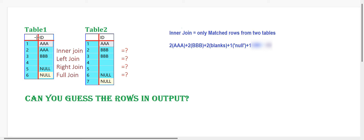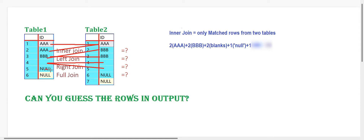Let's see table 1 and table 2. Triple A is trying to join with triple A, and the second triple A is joined with the same second triple A. Triple B is going to join with triple B, and the second triple B is again joining with the same triple B. The blank will be matched with the two blanks on the right side.